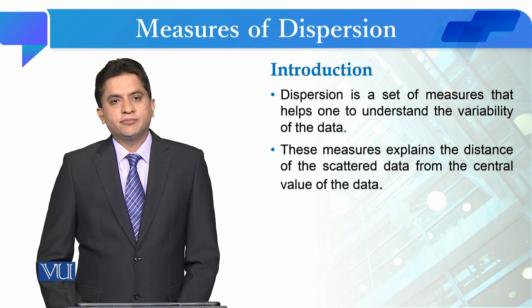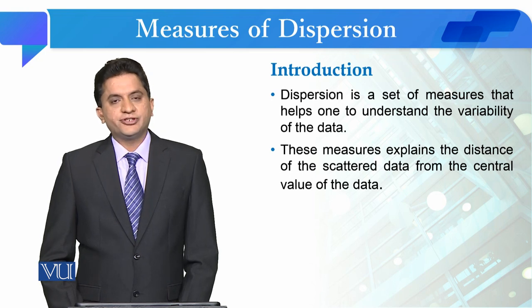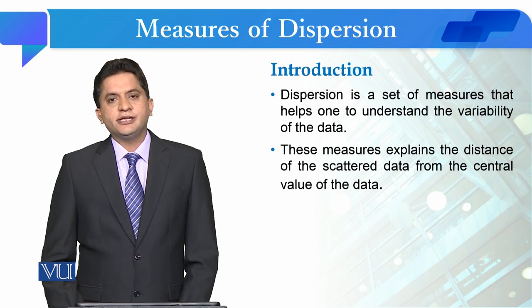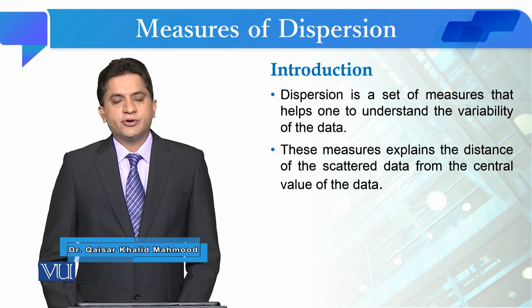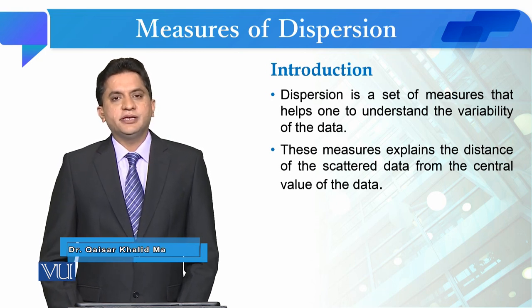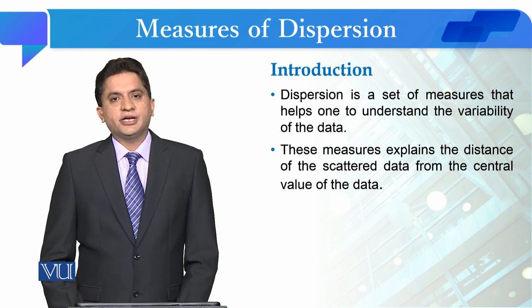Dispersion, as you know, is called scatteredness. In statistics, when we study a certain variable on a descriptive level, we see where its midpoint is, and we also see how much the data set is dispersed from the values of that midpoint.